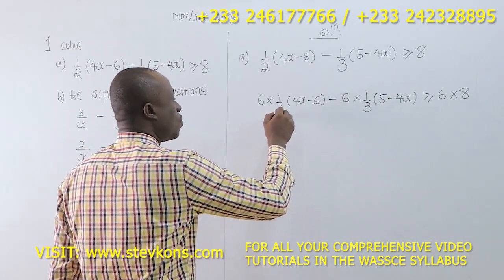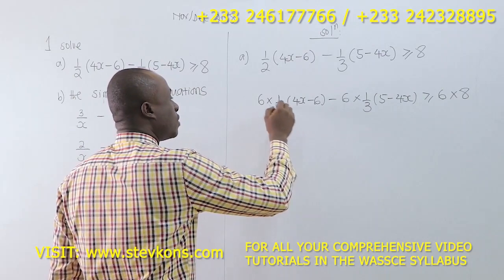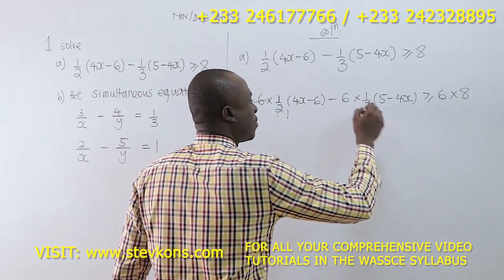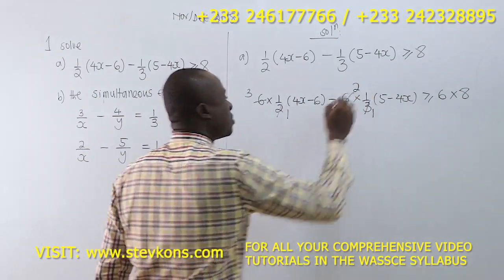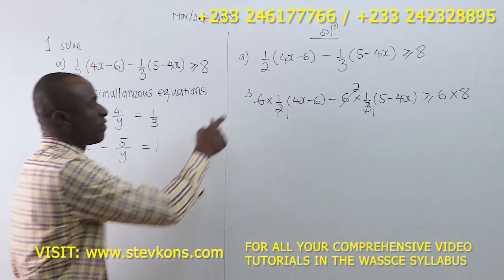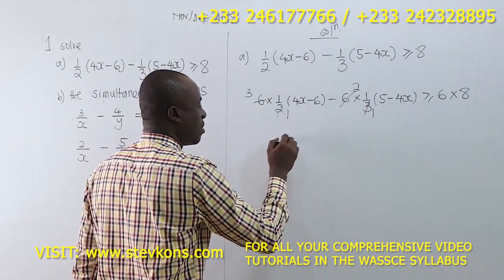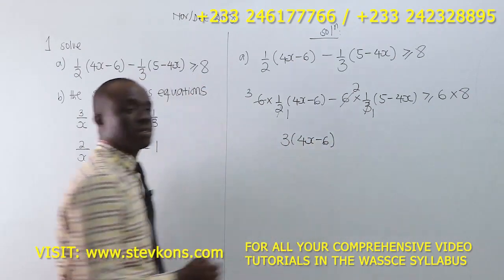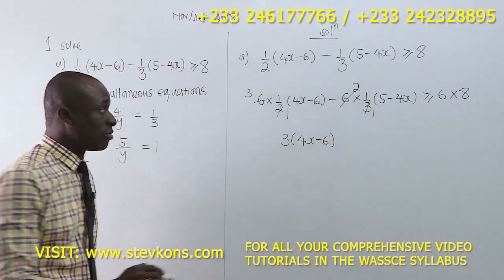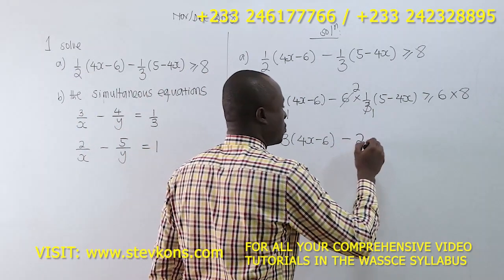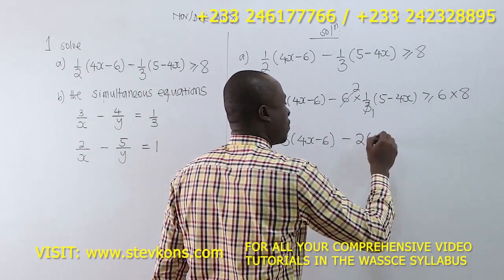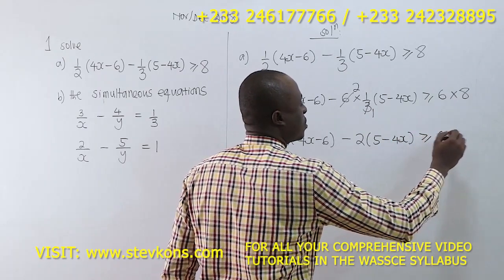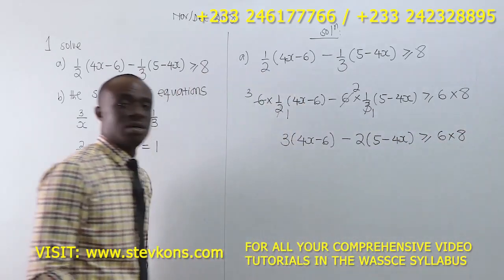Now, 2 will go into 6 three times, and 3 will go into 6 two times. So we have 3 times (4x minus 6) minus 2 times (5 minus 4x), greater than or equal to 6 times 8. Don't rush.